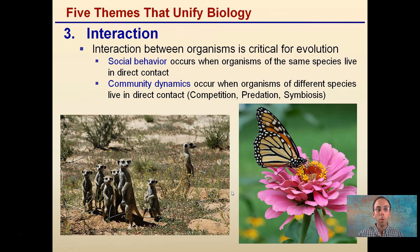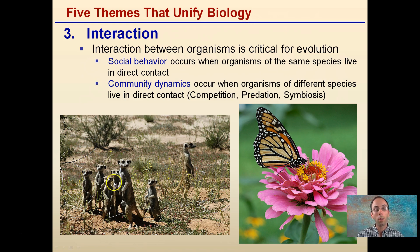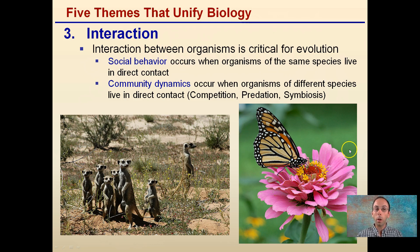The third theme that unifies biology is interaction. Interaction between organisms is critical for evolution. There's social behavior that occurs when organisms of the same species live in direct contact — you can see this with meerkats, which are highly social animals. Then we have community dynamics that occur when organisms of different species live in direct contact with one another, as with the butterfly and the flower — two very different species interacting in a community-like way.